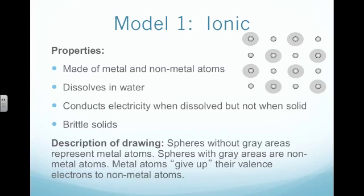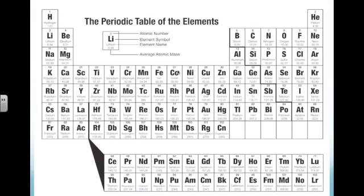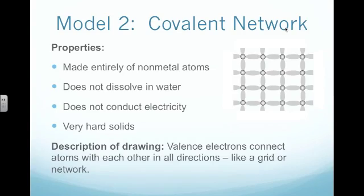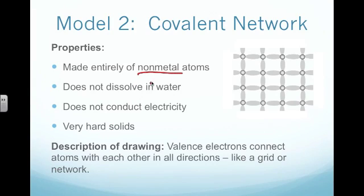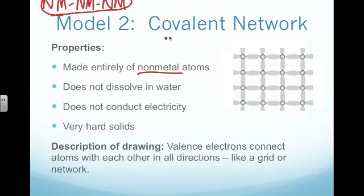Just revisiting the ionic bond quickly — when we say it's made up of a metal and a nonmetal, that means when I go to the periodic table, I see something from the left side and something from the right side. Model two is a covalent network. A covalent network is made up entirely of nonmetal atoms — it might be a nonmetal bonded with another nonmetal. Covalent network bonds tend not to dissolve in water, they don't conduct electricity, and they're usually very, very hard solids.